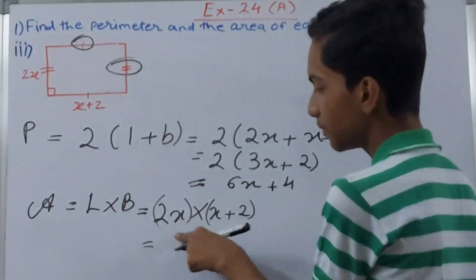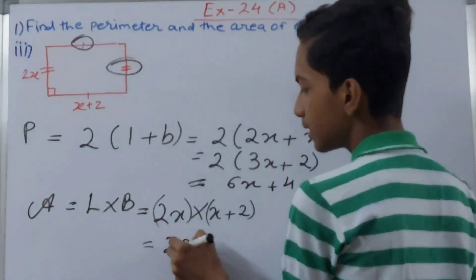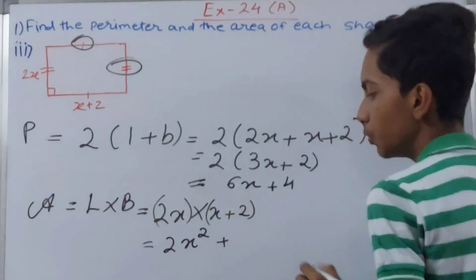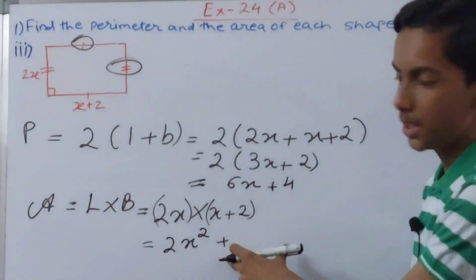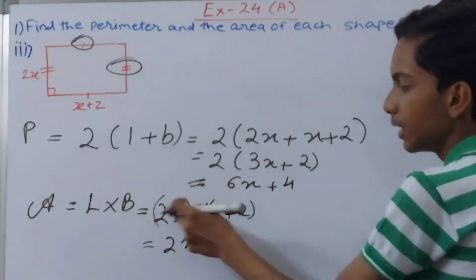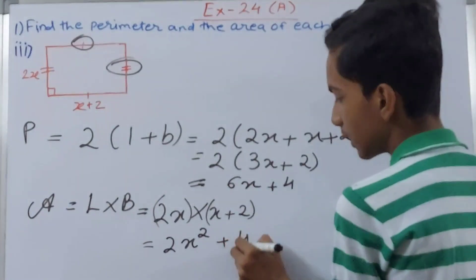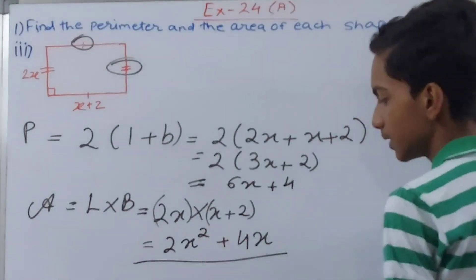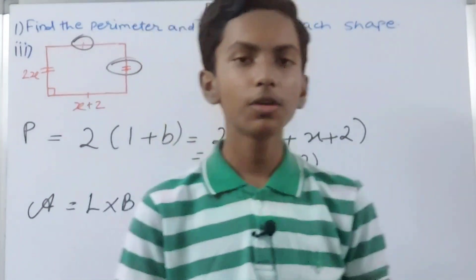So what will happen? This 2x will multiply with this x, that is 2x² plus 2x will multiply with 2. Plus sign, this sign here will be copied. If it is minus then it will be minus. Then 2 here, so 2x times 2, and what will that give us? 4x. So 2x² plus 4x, this becomes our area and answer as well.